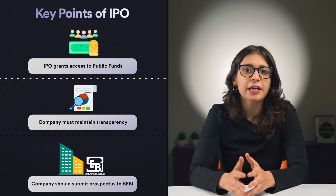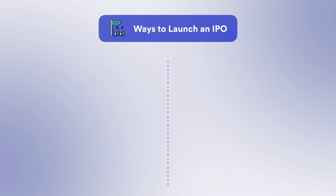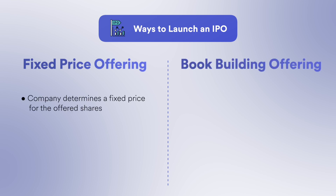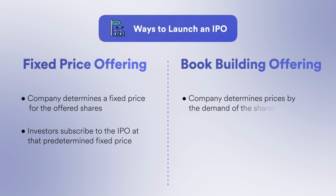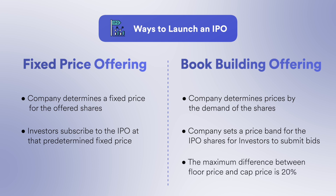At the time of IPO, the company files a Draft Red Herring Prospectus, which is a public document. A company can take two alternative approaches: Fixed Price Offering and Book Building Offering. In a Fixed Price IPO, the company determines and offers shares at a fixed price, and investors can subscribe at that price. In a Book Building IPO, the price is discovered through demand. The company fixes a price band within which investors can submit bids during the IPO period. The maximum difference between the floor price and cap price is 20%. The final price is set based on bids submitted by different investors.